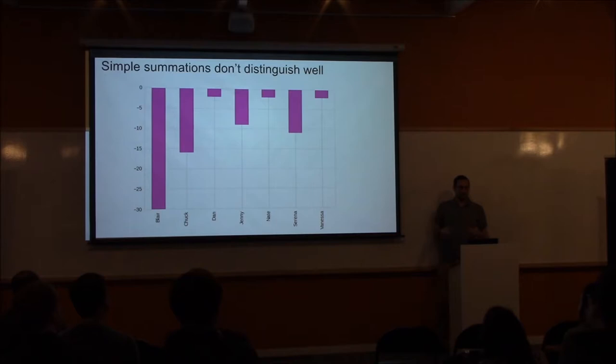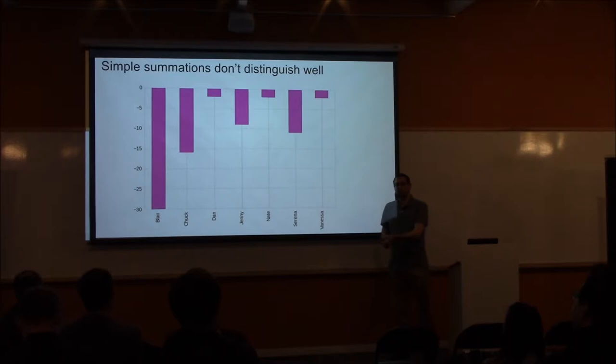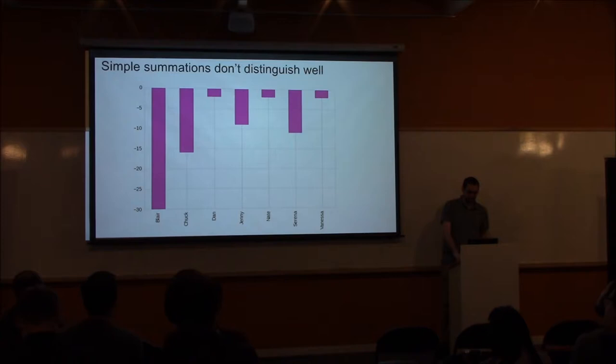So we'd like to turn to probabilistic modeling to not only get a better estimate of who is most likely to be Gossip Girl, but to model the uncertainty in each prediction — so that we can say either with confidence we know it's Dan, or that we really don't know even though we've seen the data.